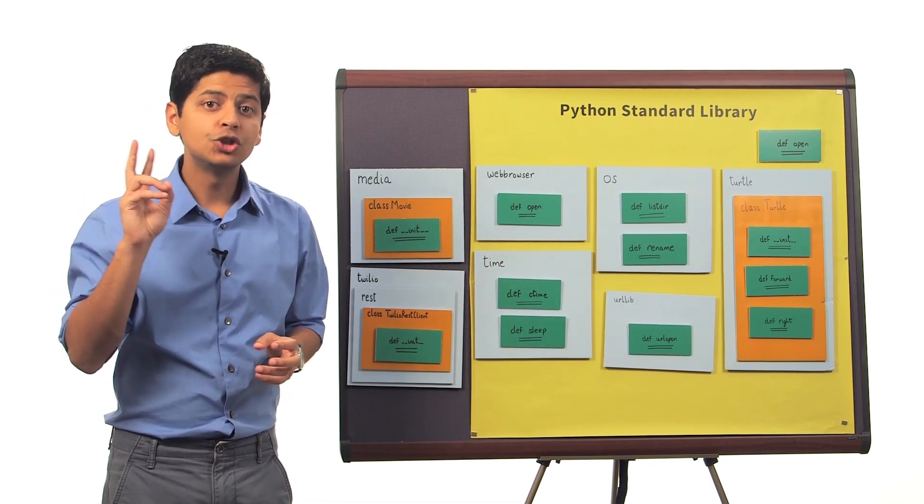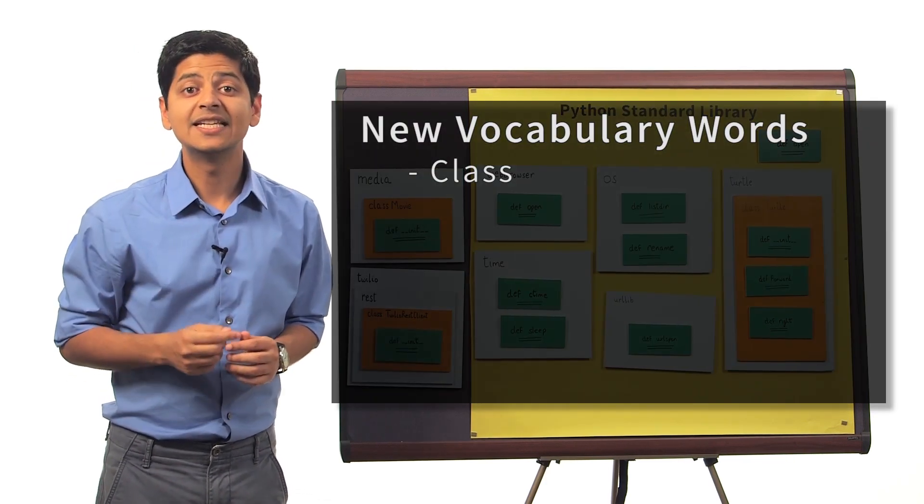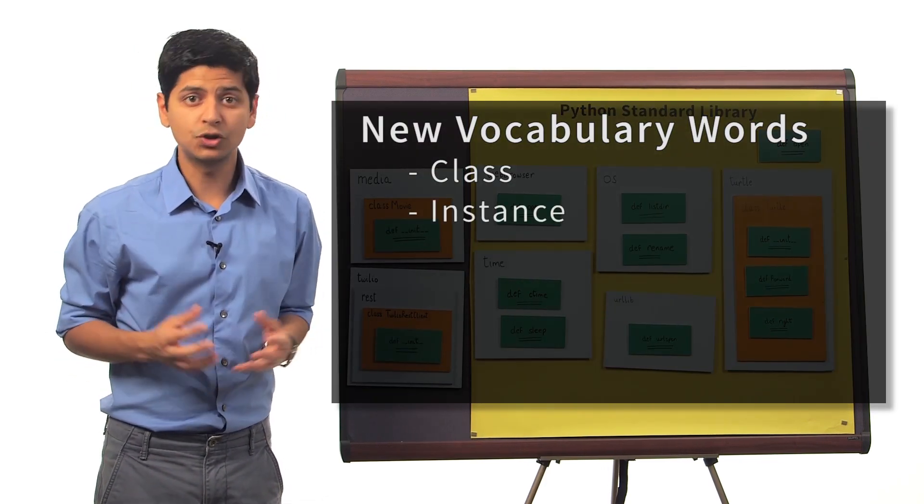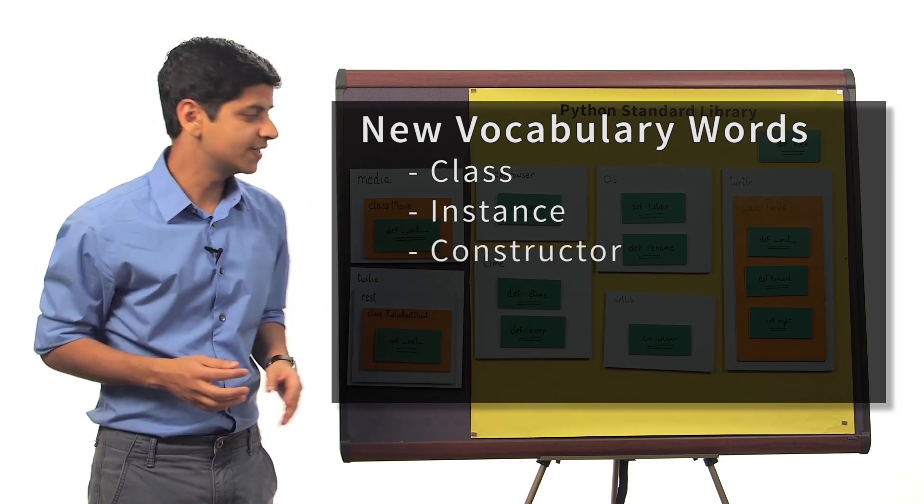So thus far, we've encountered two new words that we can add to our new word list. The first one is instance, which in this case happens to be toyStory. And the second one is a constructor, which in this case is the function init.